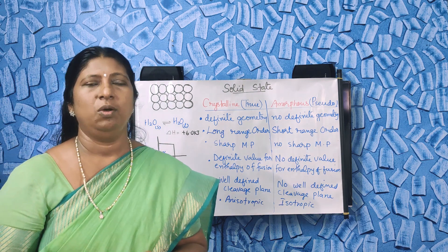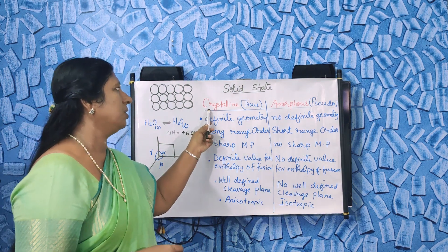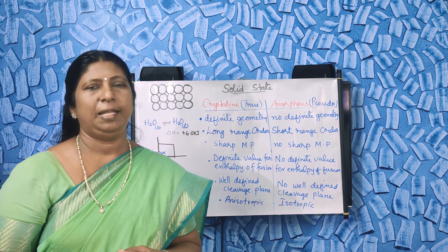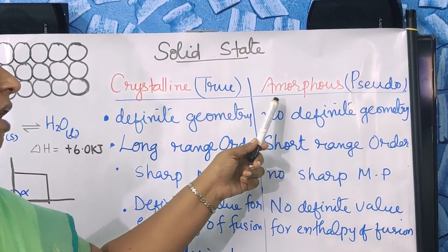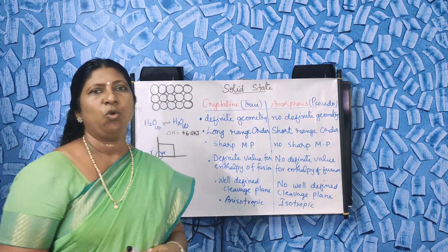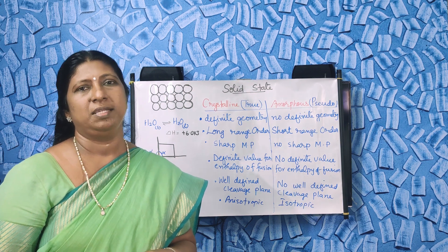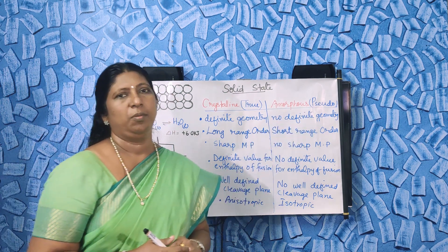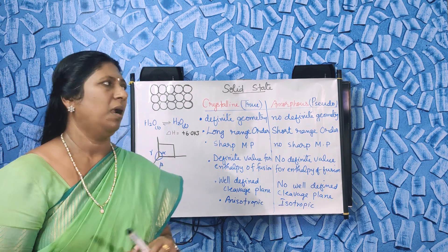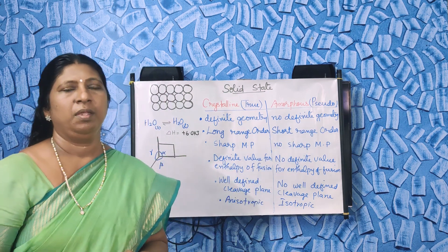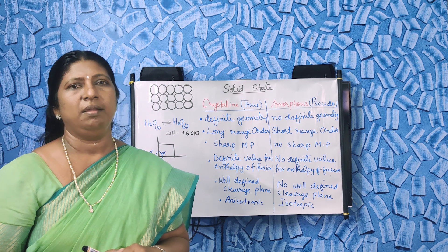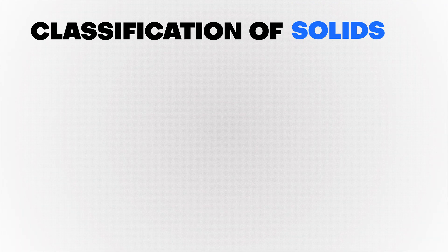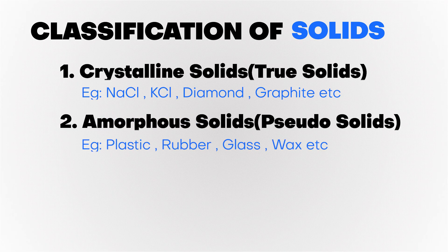We can classify solids into crystalline solids, or true solids. Plastic, rubber, and wax do not have a definite geometry — these are called amorphous solids. Amorphous in Greek means shapeless. They are also called pseudosolids. So according to shape, solids are classified into two: crystalline solids, which are true solids, and amorphous solids, which are pseudosolids.